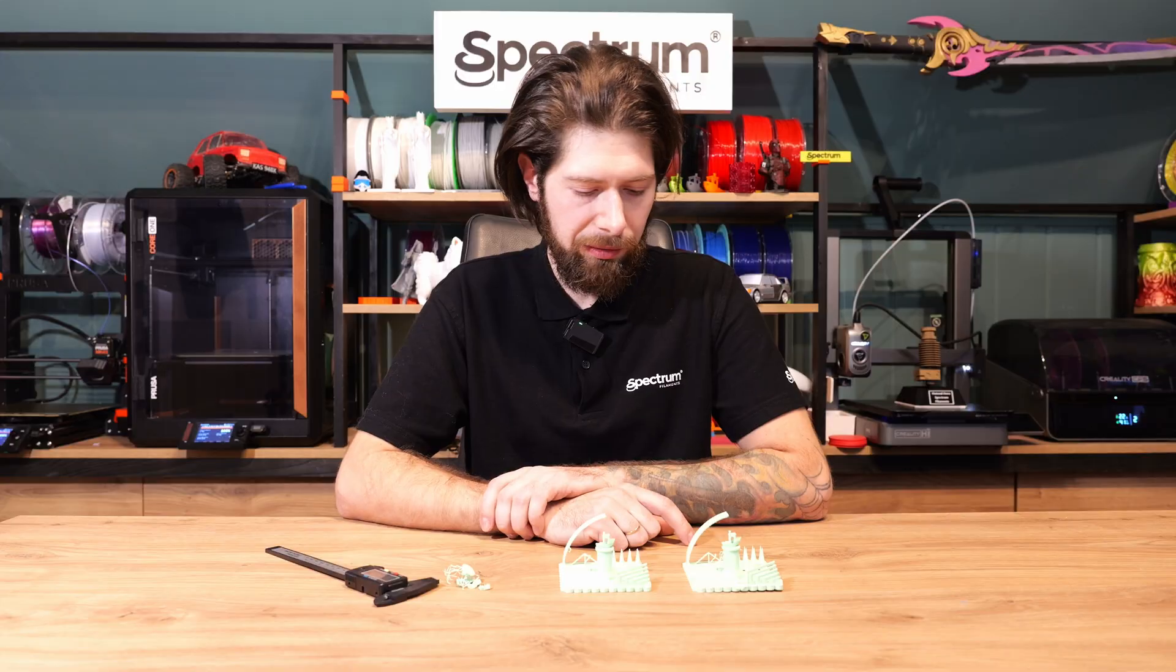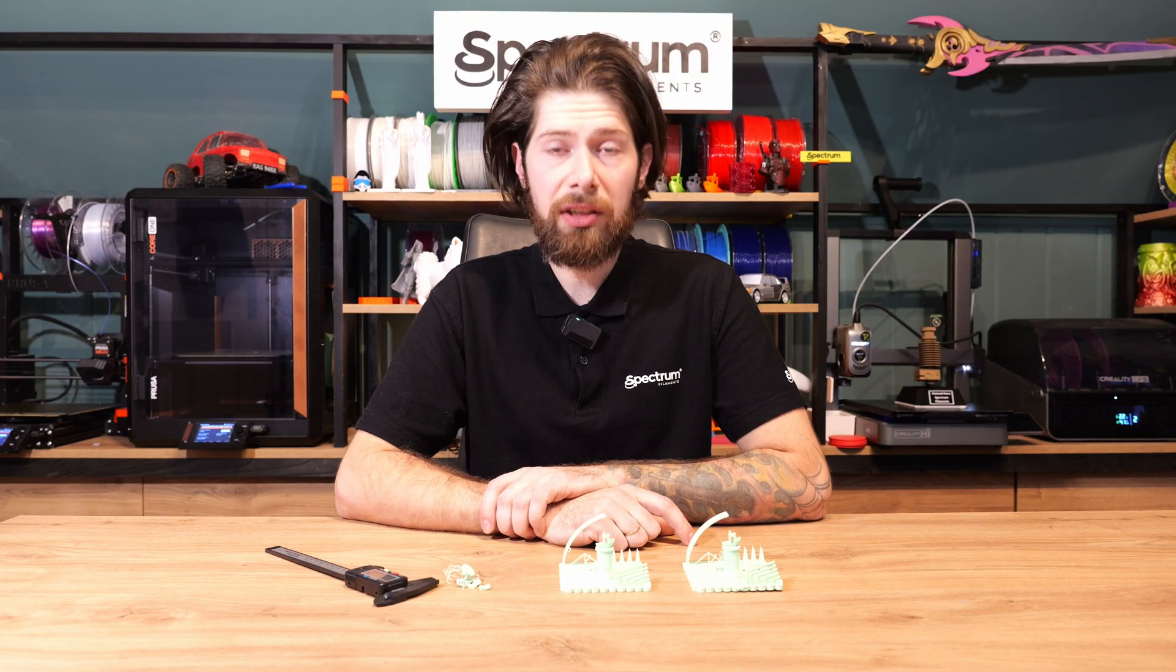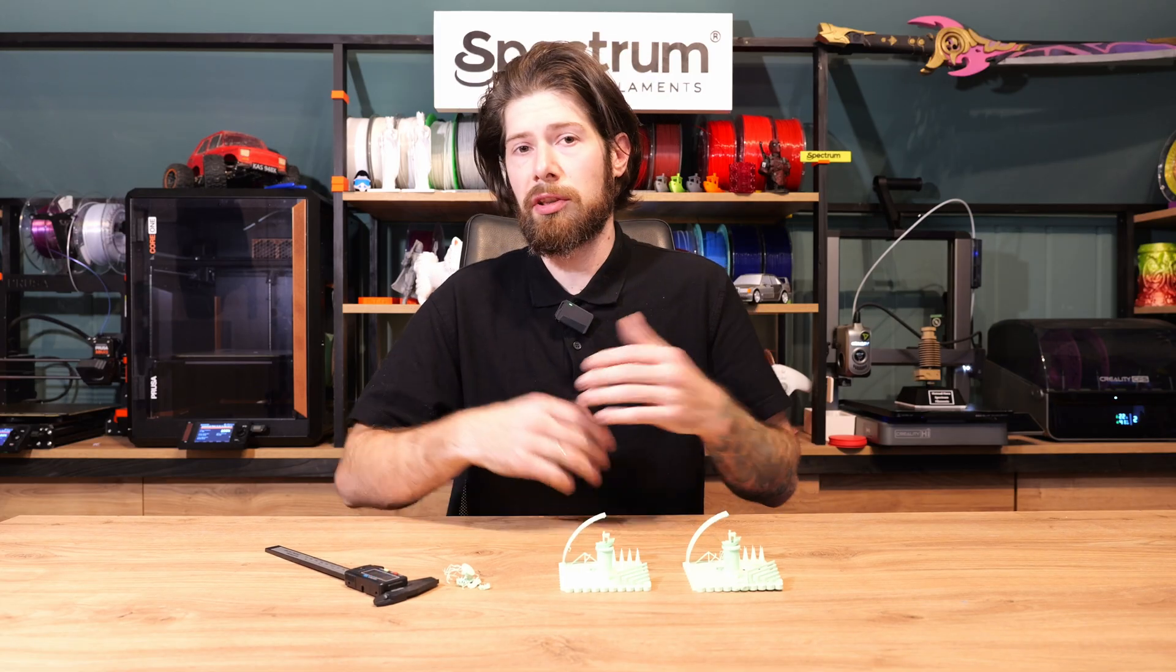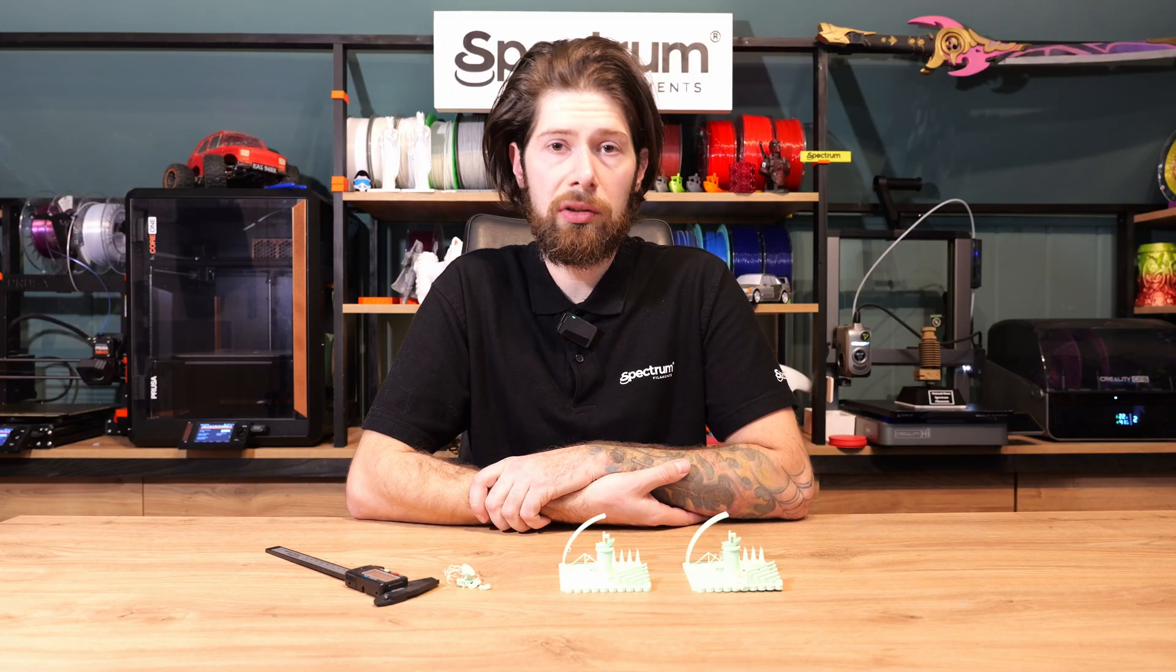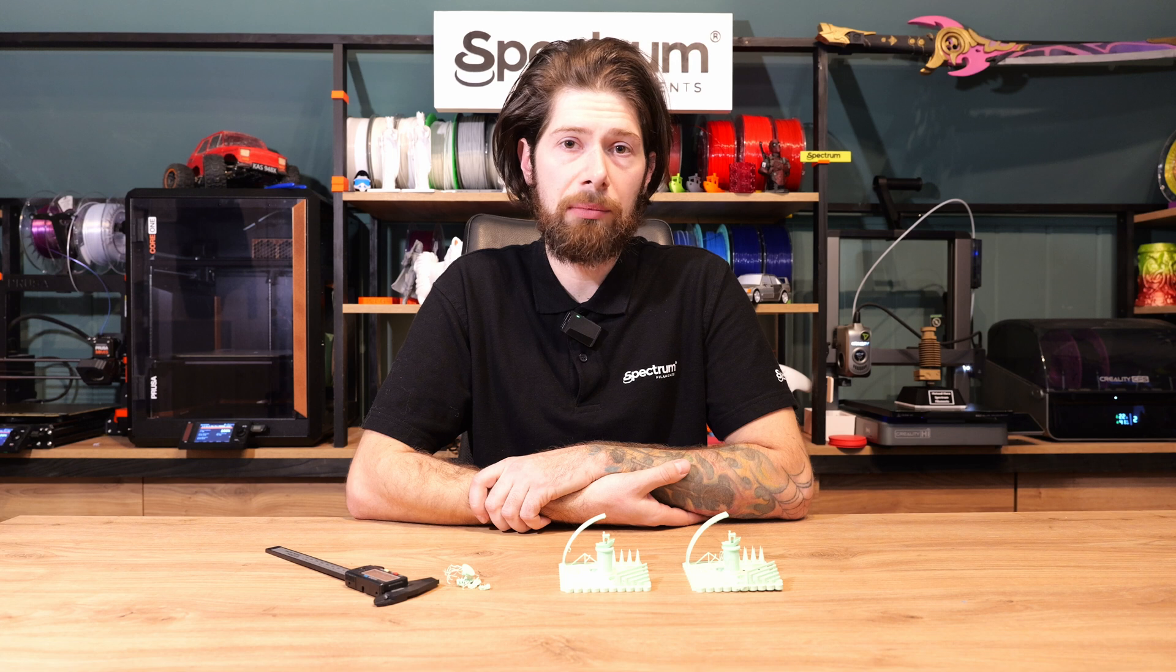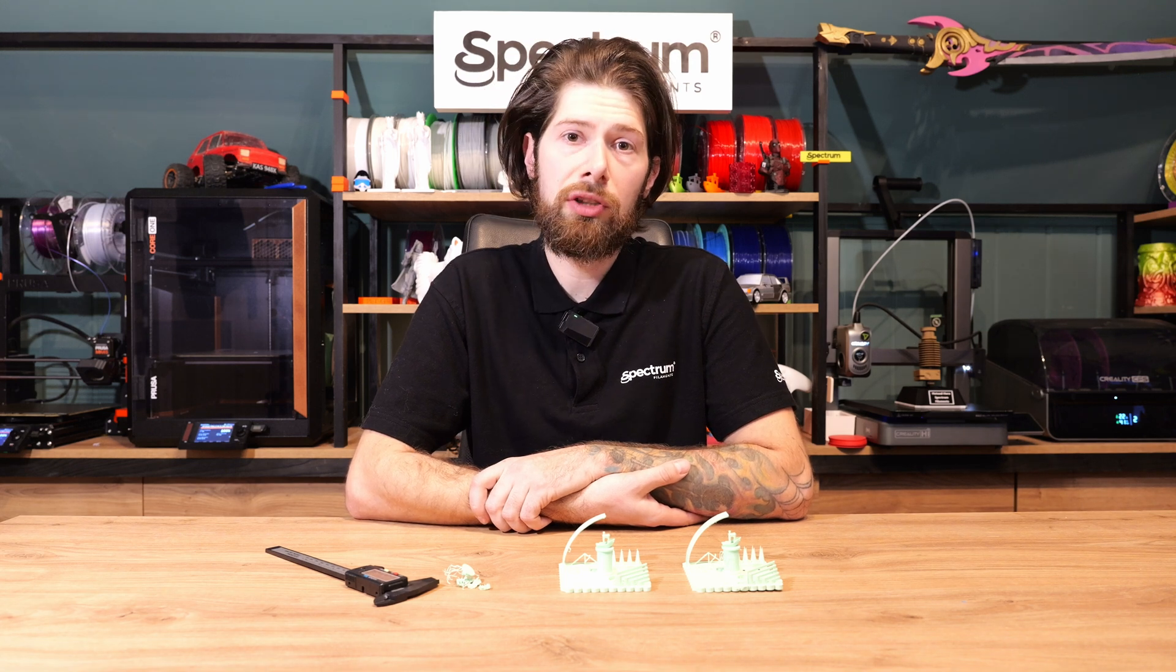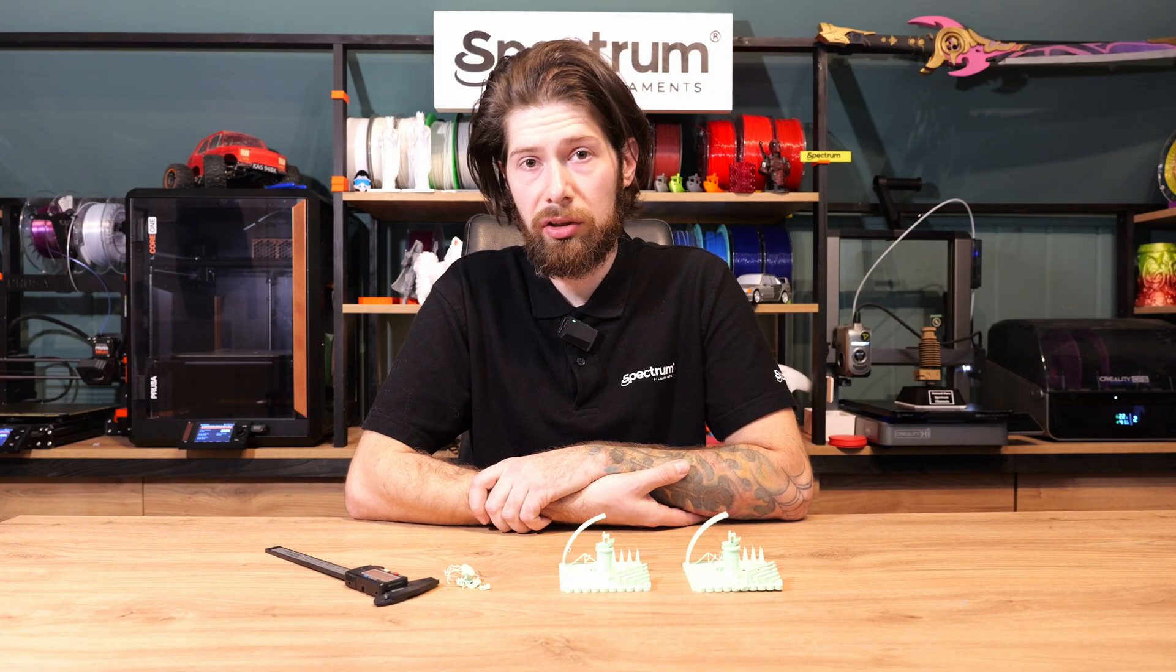But in the end you need to find the proper solution for your 3D model. For example if you're printing minis you need to find the proper speeds, proper cooling and proper retraction. But if you're printing something bigger like cases or special brackets then you need to adjust for example extrusion rate and temperatures for better adhesion.